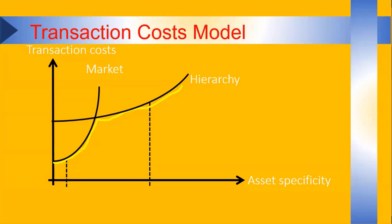I've added two dashed lines. The one on the left is a hypothetical level of asset specificity for which the market will be the cheapest alternative. And the one on the right will be a hypothetical level of asset specificity for which the hierarchy will be the cheapest alternative.